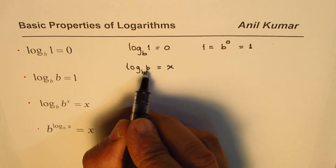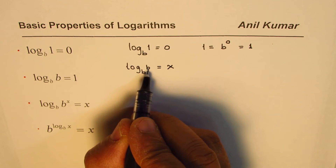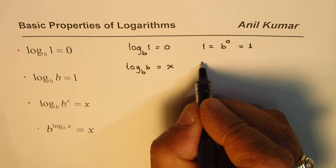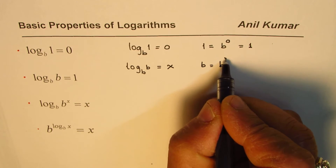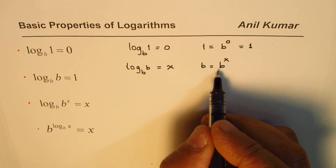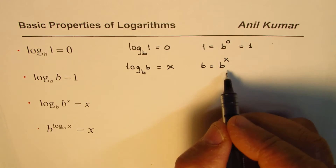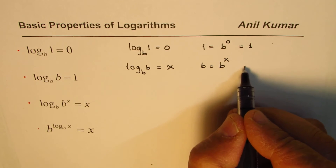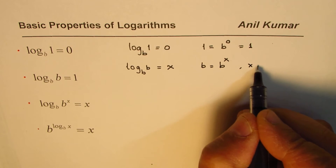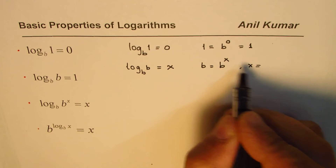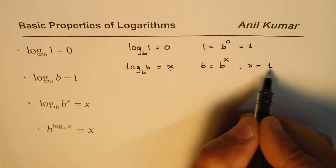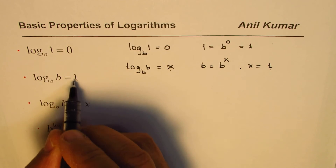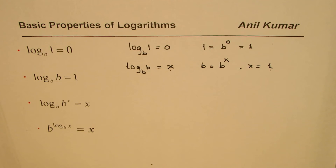We can write b equals b to the power of x, and this is true only when x equals 1. So that means x is 1. That is how you can prove it as well.